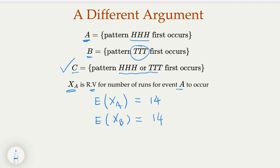Think about it: on average every 14 steps you're going to see HHH once, because the game stops once you see that. And every 14 steps on average you're going to see TTT. So on the average, every 14 steps you're going to see one TTT and one HHH. For event C, it occurs twice on average in every 14 steps. Therefore the expected value of XC equals 7. The number of flips needed to see HHH or TTT is 7.